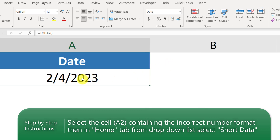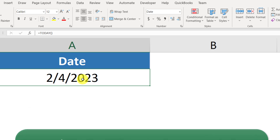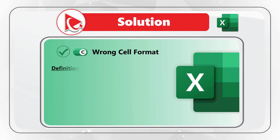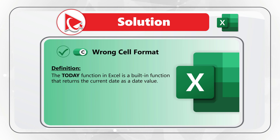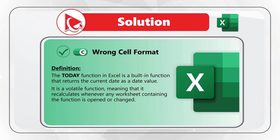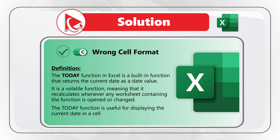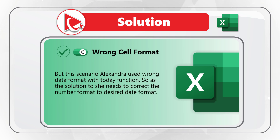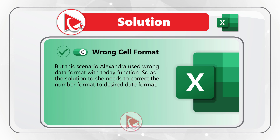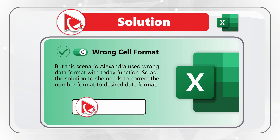The key is the data format. If you click instead of General and select Short Date, it will be formatted to today's date — February 4, 2023. The TODAY function in Excel is a built-in volatile function that returns the current date and recalculates whenever any worksheet containing it is opened or changed. In this scenario, Alexandra used the wrong data format, so the solution is to correct it to the desired date format.